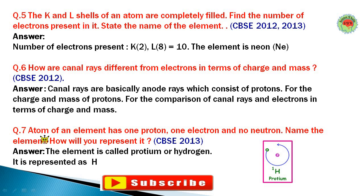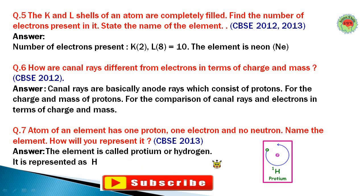Question number seven: An atom has one proton, one electron, and no neutron. Name the element and represent it. This element is protium, which is an isotope of hydrogen. Protium has only one proton, one electron, and no neutron, so it is represented as hydrogen-1.